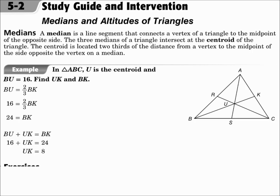The first concept is the median. The median is the line segment that connects a vertex of a triangle to the midpoint of the opposite side. It goes from an angle to the midpoint of the opposite side, and when you draw all three of them, they intersect at the centroid. The centroid is two-thirds of the distance from the vertex to the midpoint of the opposite side.